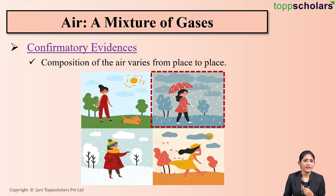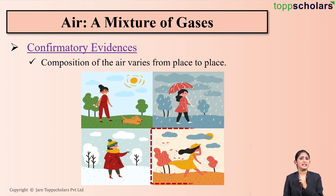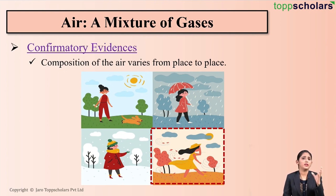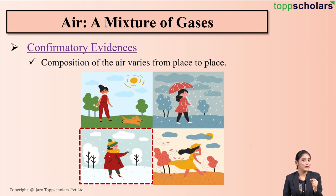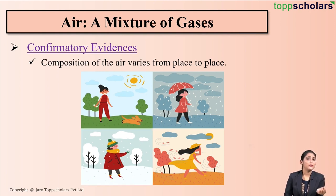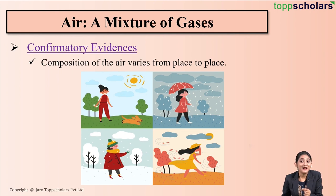In the rainy season, the rate of precipitation is high and so the amount of water vapour present in the atmosphere is high. A pleasant season is the one wherein the amount of water vapour in the air is balanced. Whereas in the winter season, water vapour freezes and so we are able to enjoy the snowfall. Here we can see that the composition of air varies from place to place, and since the composition of a compound is fixed, this means air is a mixture.